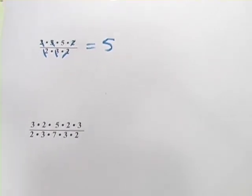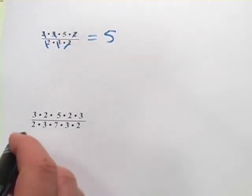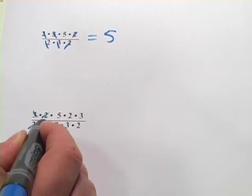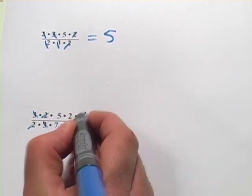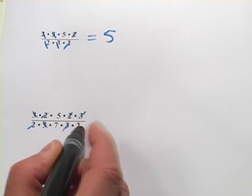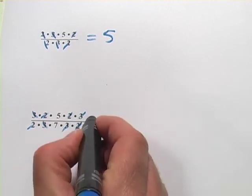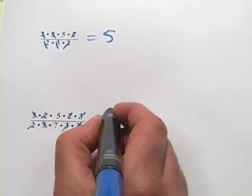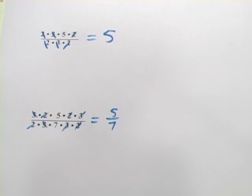All right, we've got one more here. So looking for the pairs. There's a 2 on the bottom, 2 on the top, 3 on the top, 3 on the bottom, 3 on the top, 3 on the bottom, 2 on the top, 2 on the bottom. And I'm left with just a 5 on the top and a 7 on the bottom. So the answer for that one is 5 sevenths.